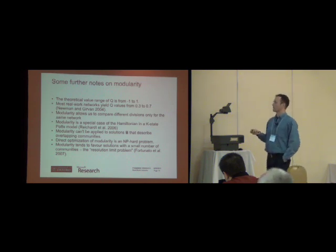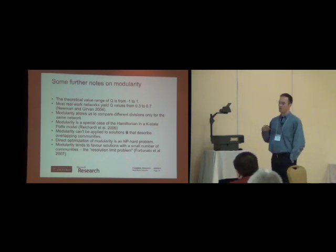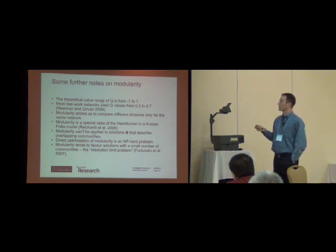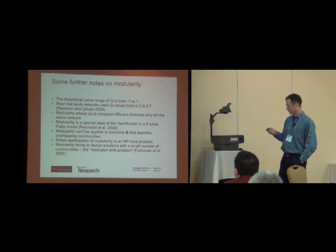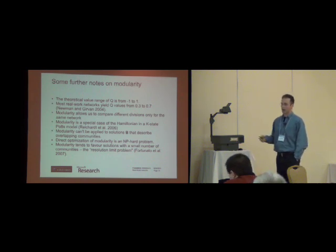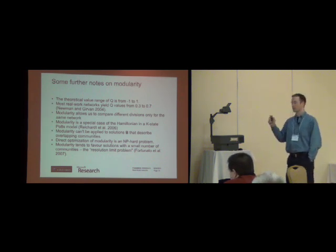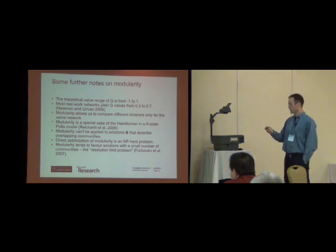And you get penalized. This is sort of like subtracting off the Erdős-Rényi random graph. You get penalized for random connections that are assigned within a community. So this slide is better. It's in a nutshell what's going on. The modularity goes from minus one to one. It never quite reaches one, but you can get quite close to it. And real world networks go between 0.3 and 0.7. So it's rarer to find one close to zero.